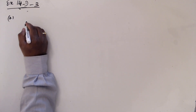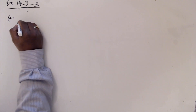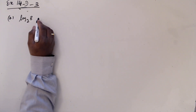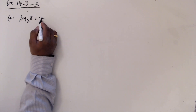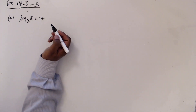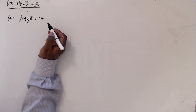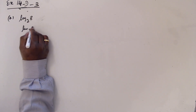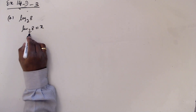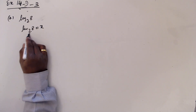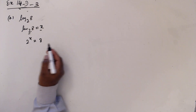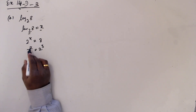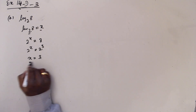Without using a calculator, find the value. So log base 2 of 8 — which part is now missing? Missing is the power. We want to find x. So log base 2: the missing is power, it means 2 to the power x equals 8. So 2 to the power x equals 2 to the power 3. So x equals 3.